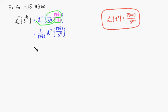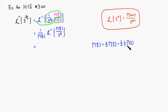Before we finish, we need to compute gamma of 5 halves. Using the reduction formula, gamma of 5 halves equals 3 halves times gamma of 3 halves. And gamma of 3 halves equals 1 half times gamma of 1 half. Since gamma of 1 half is known to be the square root of pi, we get 3 over 4 times the square root of pi. So 1 over gamma of 5 halves is 4 over 3 square root of pi.